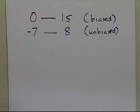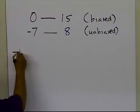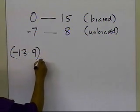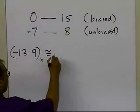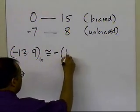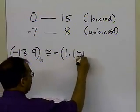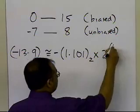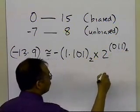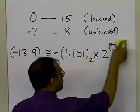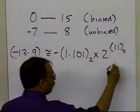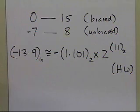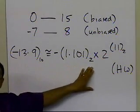This will be clear if we go through an example. We have minus 13.9 base 10, and I'm going to write down the equivalent floating-point representation — we have done this previously. It is minus 1.101 base 2 times 2 to the power 11 base 2, which is the same as 2 to the power 3. You can do this as homework if you can't find the previous example.